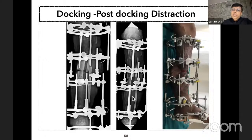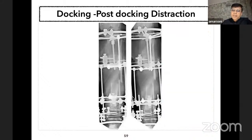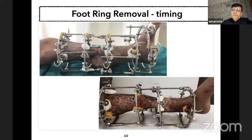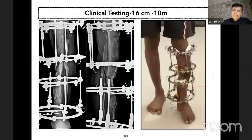Post-docking distraction is essential to address limb length discrepancy; otherwise the patient will have some residual discrepancy of around two to three centimeters. There is fibular overlap visible at the time of docking, and post-docking distraction addresses the limb discrepancy. The foot frame I remove easily at six to eight weeks post-docking, so the patient will have good movement at the ankle joint.